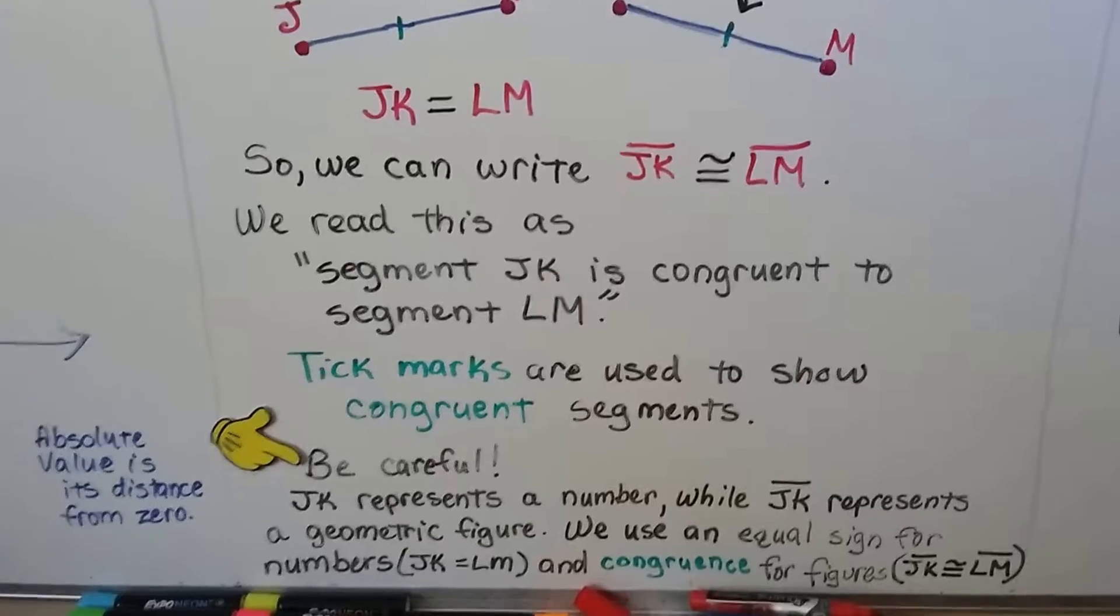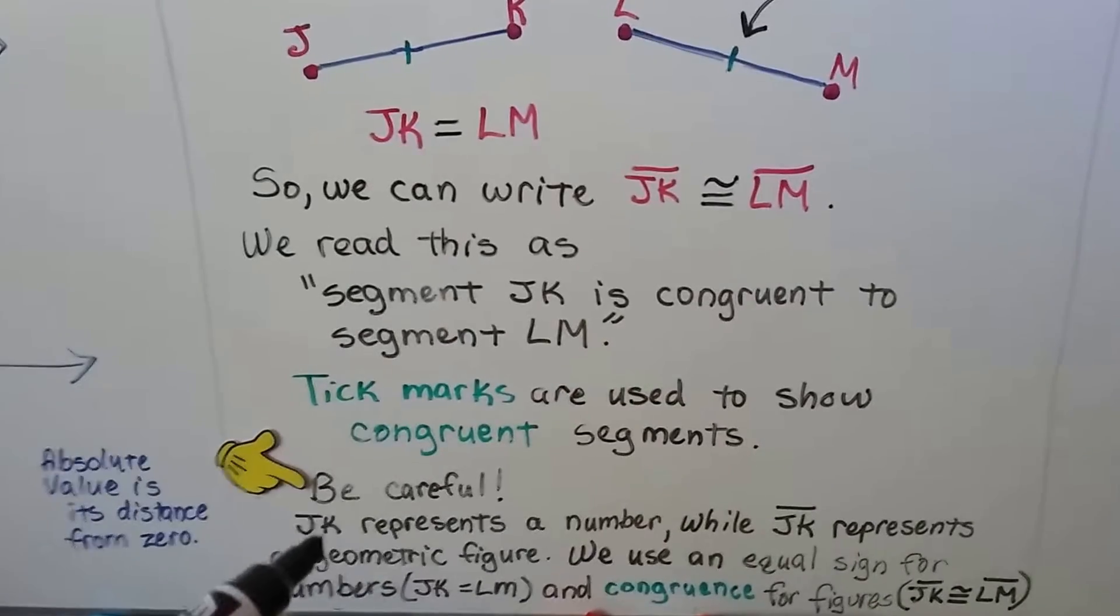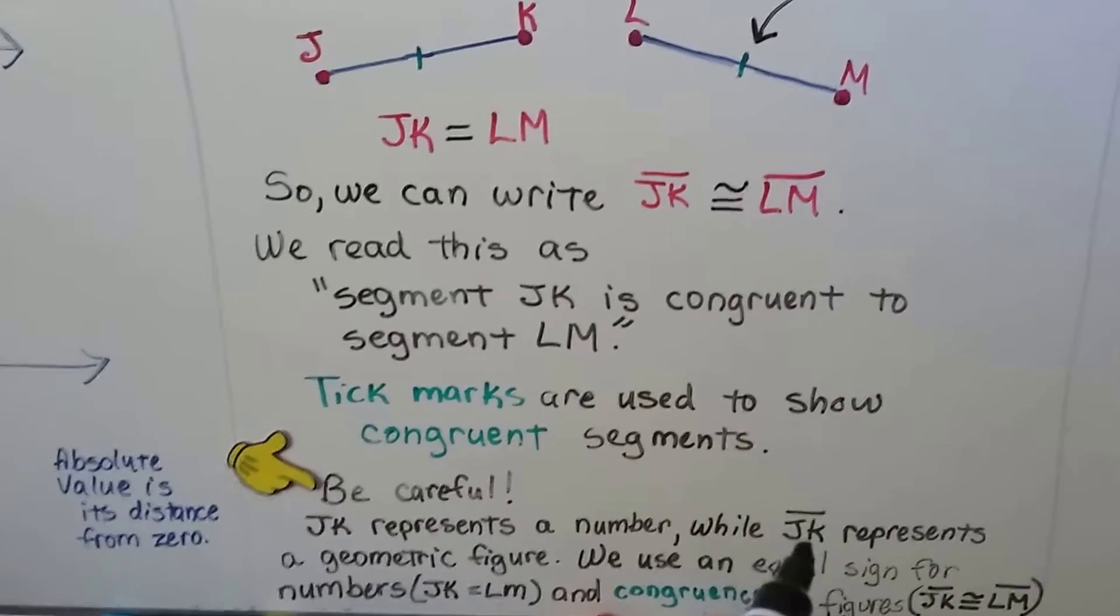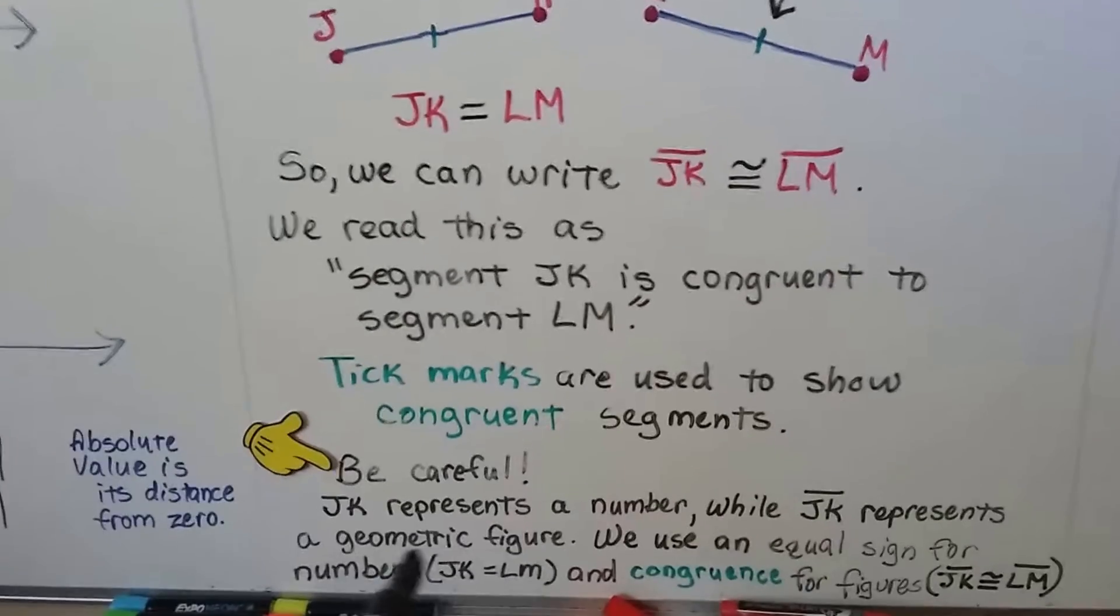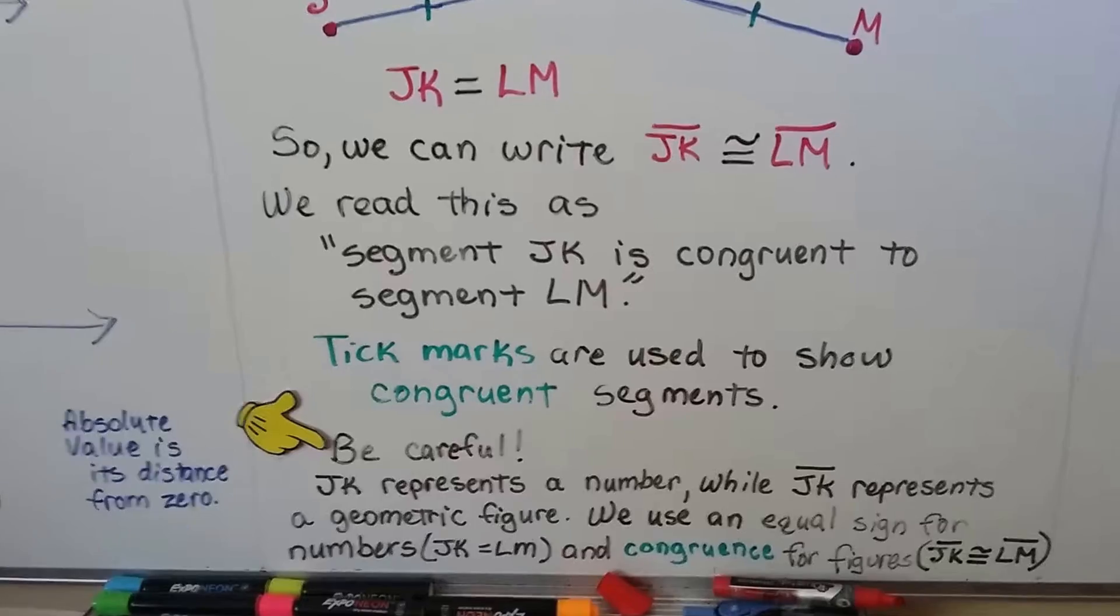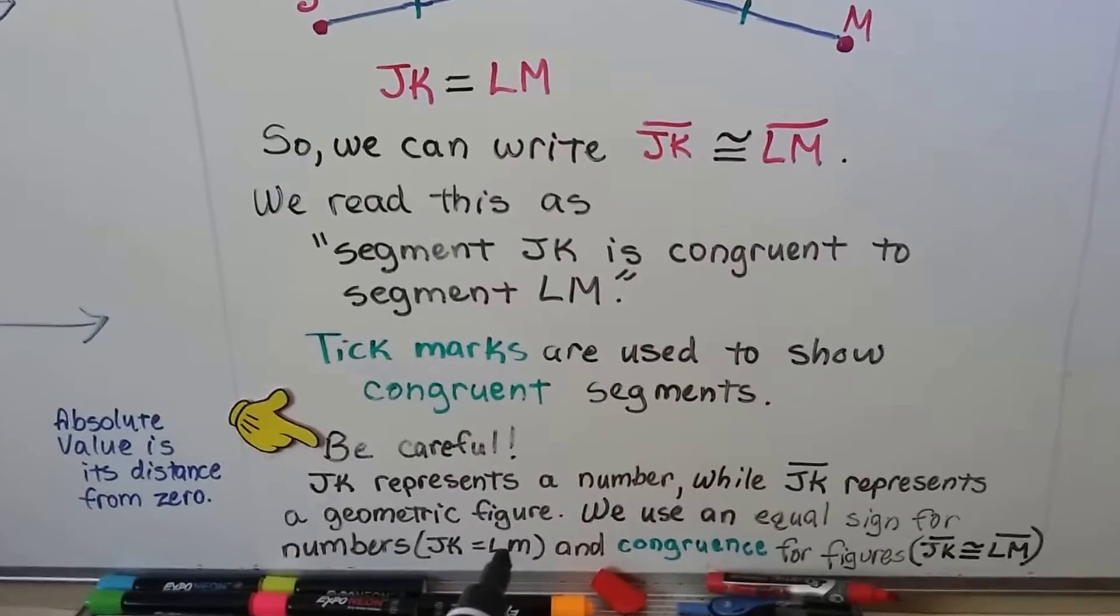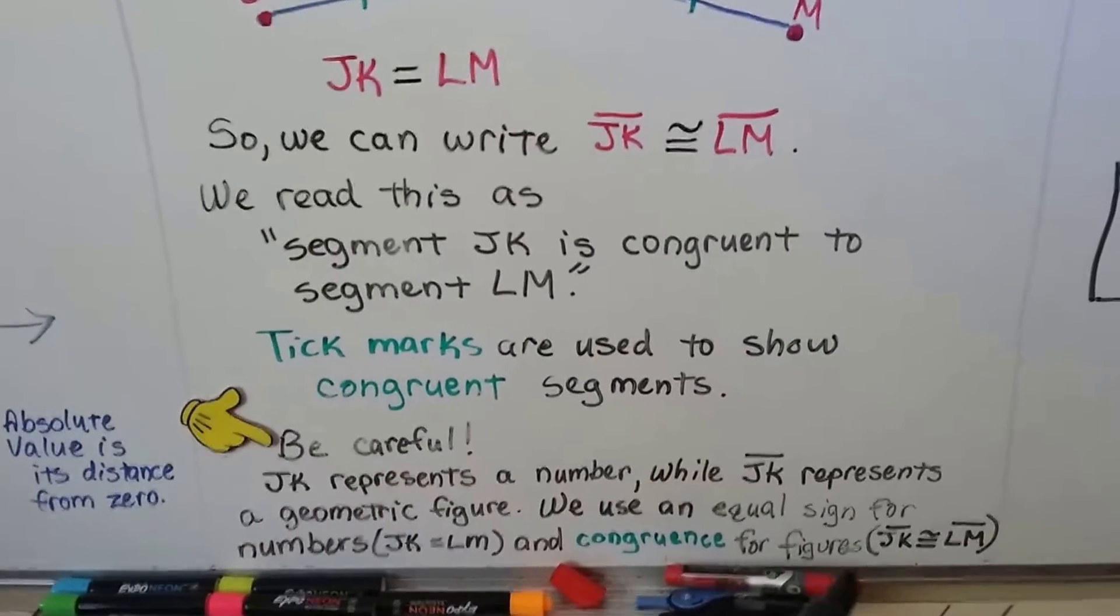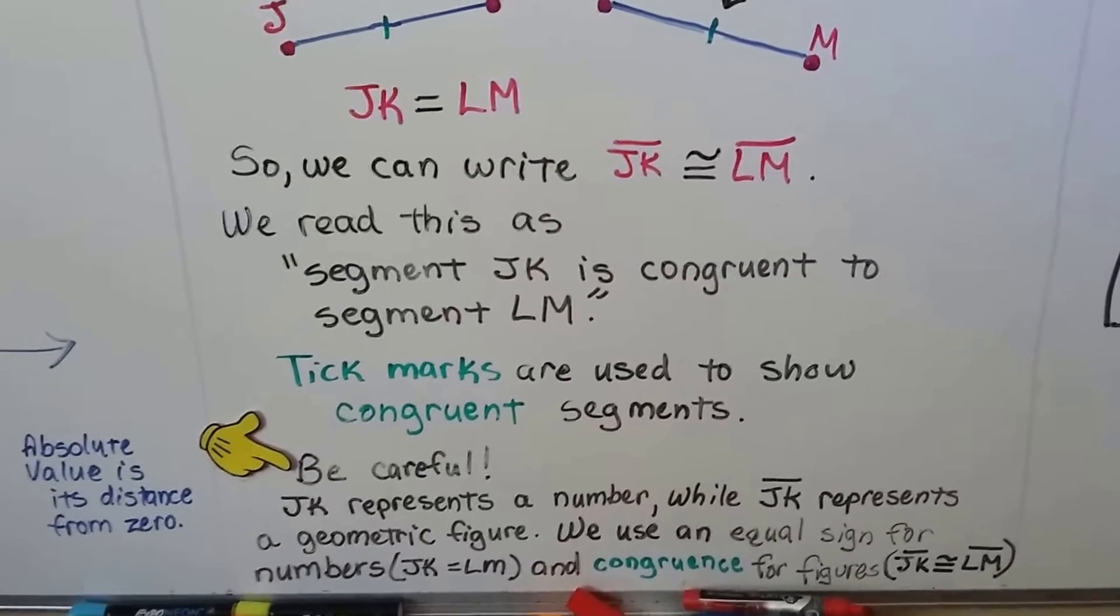But be careful. JK, just written like this with no bar over the top, represents a number, a distance. While this JK with the bar over the top is segment JK, it represents a geometric figure, a segment. And we use an equal sign for numbers when there's no bar, like JK equals LM. And congruence, this congruent symbol for figures, segment JK is congruent to segment LM.